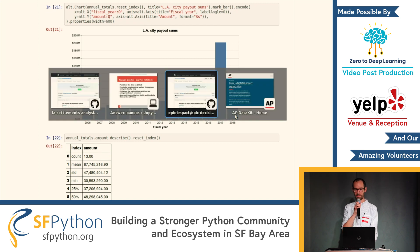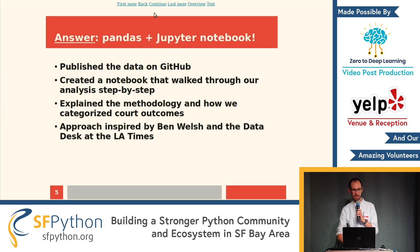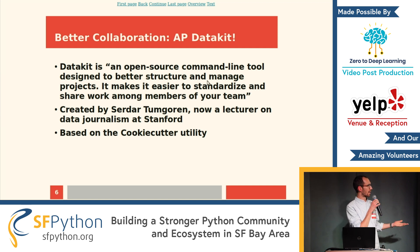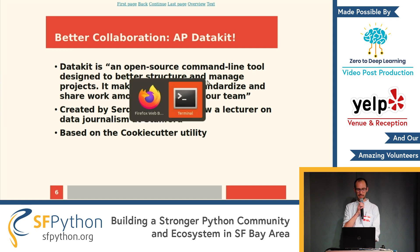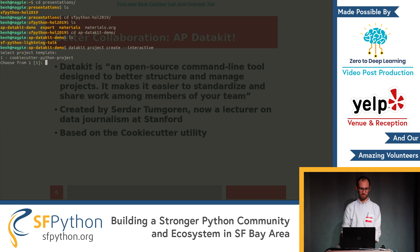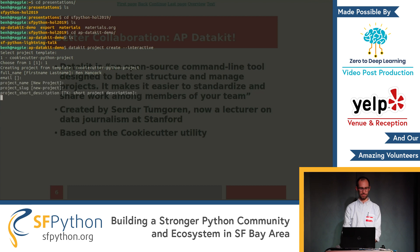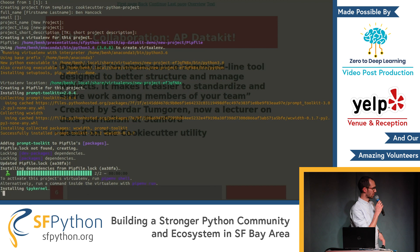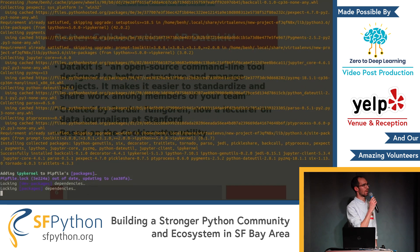The other thing I want to talk about quickly is a tool that the Associated Press created called Data Kit. It's an open source command line tool — if you're familiar with cookie cutter, it's based on that. It was created by Senator Tumgren, who is now a lecturer at Stanford on data journalism. It's a utility that makes it really easy to create a project outline, so you can collaborate more easily and you're not trying to figure out where your files go.